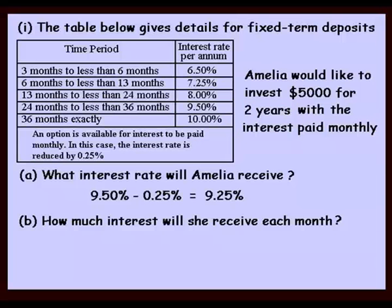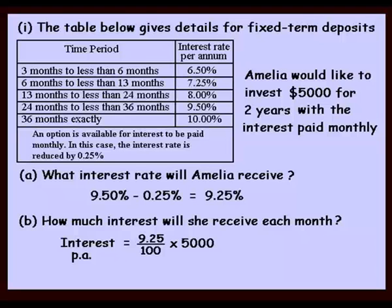Part B: How much interest will she receive each month? Well, the interest will be 9.25%, which we write as 9.25 over 100, multiplied by $5,000. Now at this stage, that would be the interest per annum — in other words, the interest per year. But we're after how much she should receive each month, so we divide by 12. When we do that, we come up with $38.54. In other words, Amelia will receive $38.54 per month in interest.